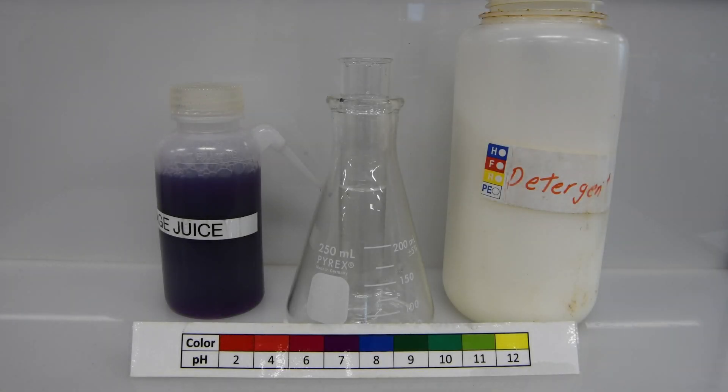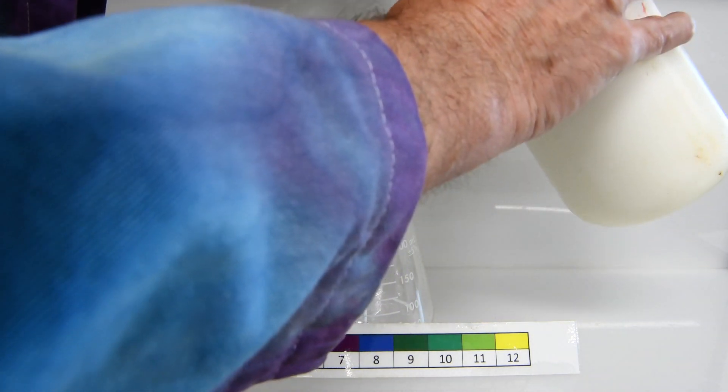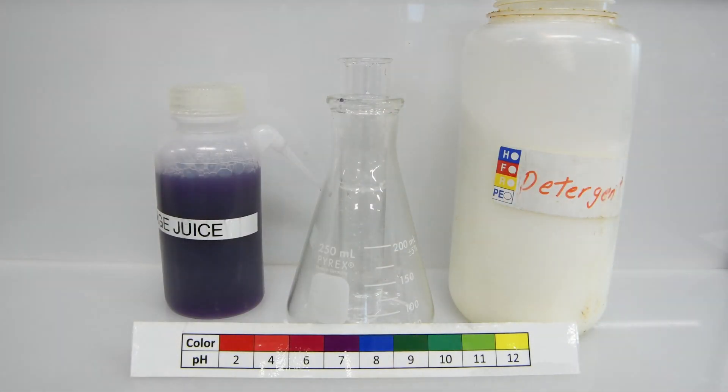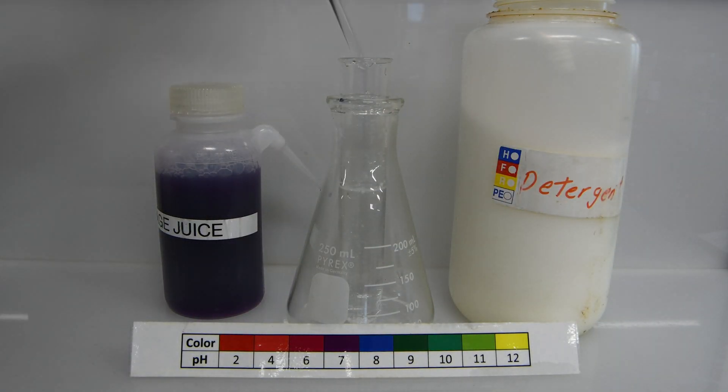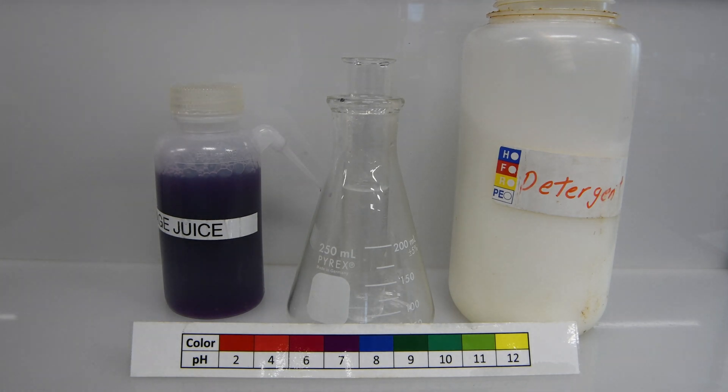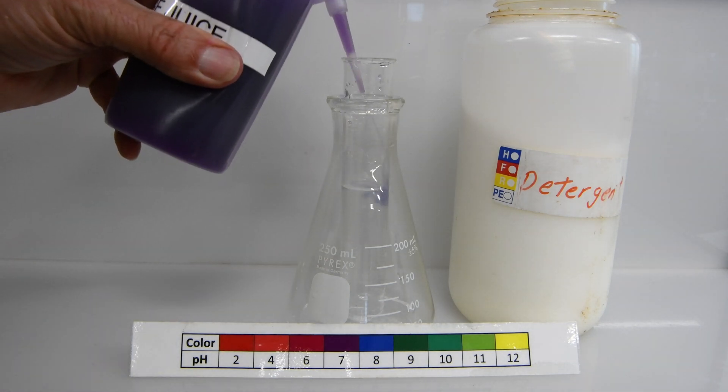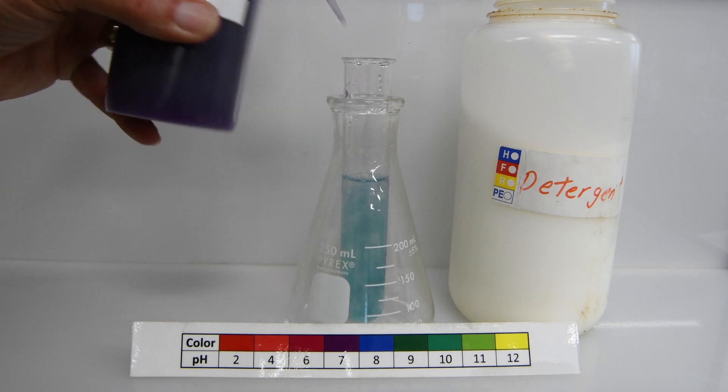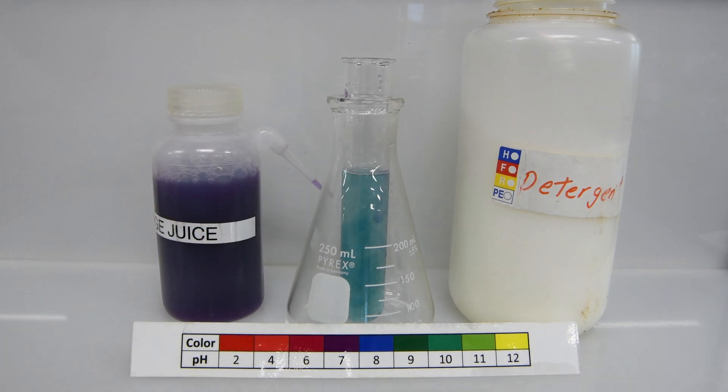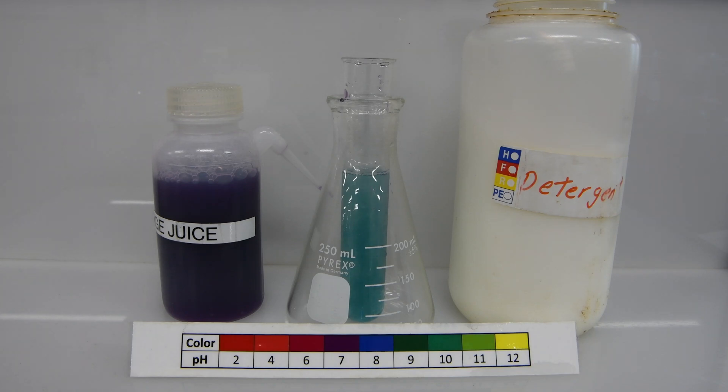We're going to wrap up our cabbage juice tests with some laundry detergent. So we'll add our usual small amount. And go ahead and stir that to get it dissolved. And now we add the cabbage juice. And we get a very lovely sort of teal green color. So that wraps up all of our cabbage juice tests. Now we're going to move on and work with the pH meter.